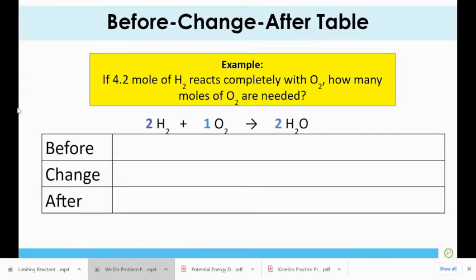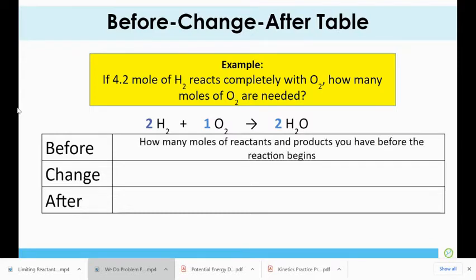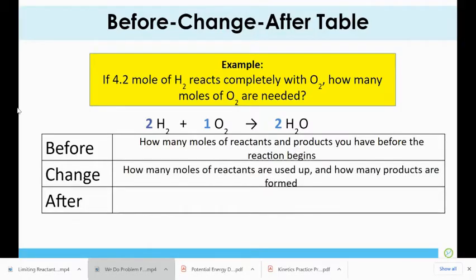So I'm going to set up what's called a BCA chart. BCA stands for before. How many moles of reactants and products do you have before the reaction begins? Change, this is the stoichiometry, how many moles of reactant are used up and how many products are formed. After is what is left over when the reaction is finished.